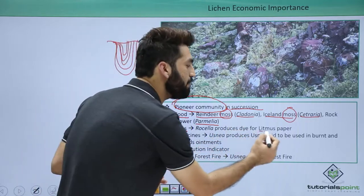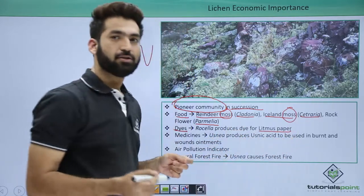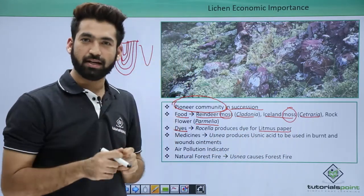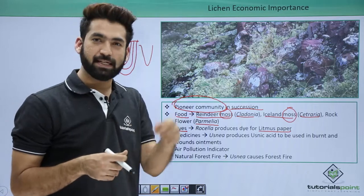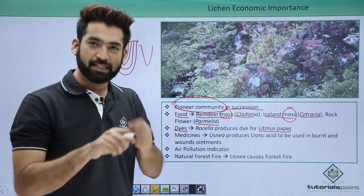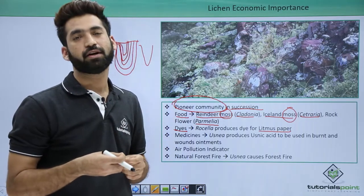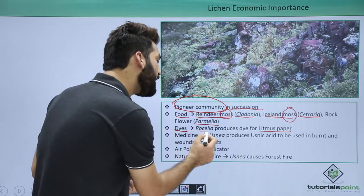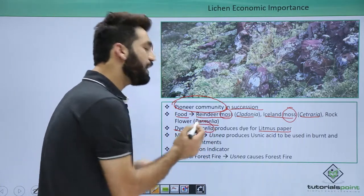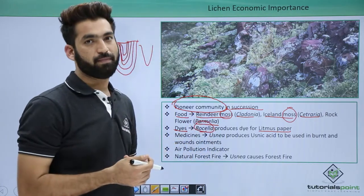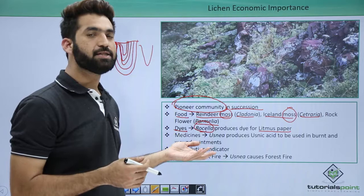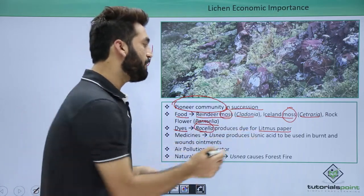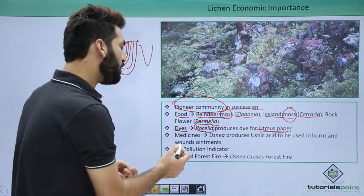Lichens are also used as dyes. You must have heard about litmus paper — it contains a dye that shows color differences with acids or bases. Rocella tinctoria is the lichen that yields the dye used to prepare litmus paper.